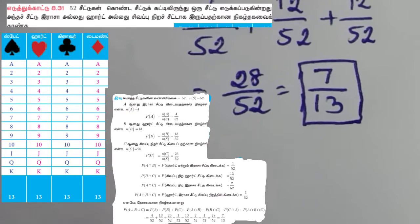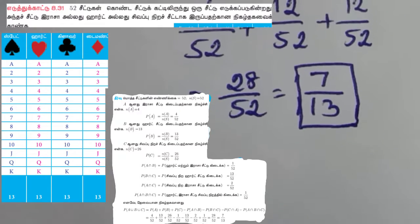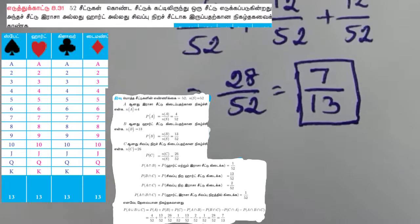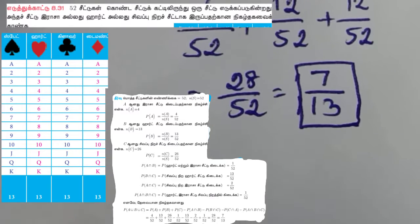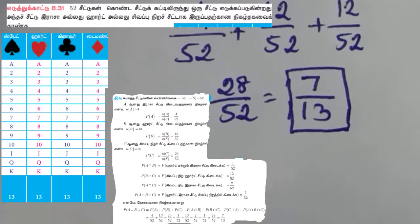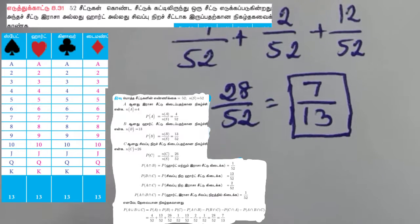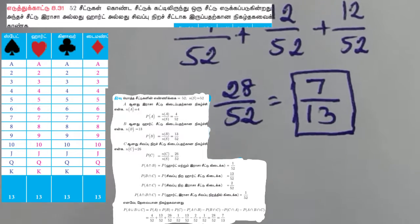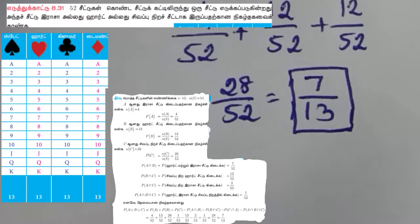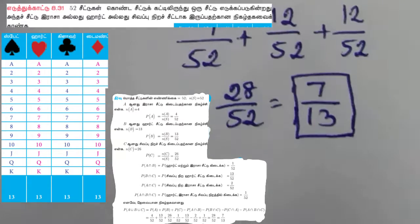We will register B union C: P(B) + P(B) + P(C) minus P(A intersection B) minus P(B intersection C) minus P(C intersection A) plus P(A intersection B intersection C). That's how we apply the formula.